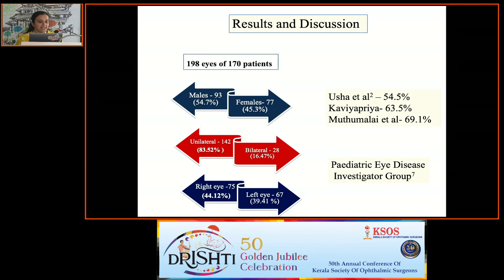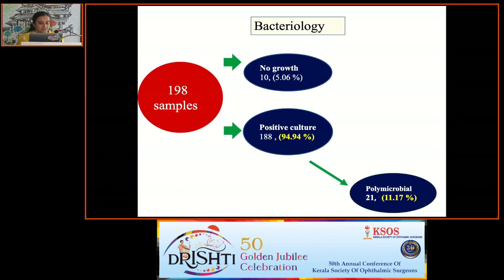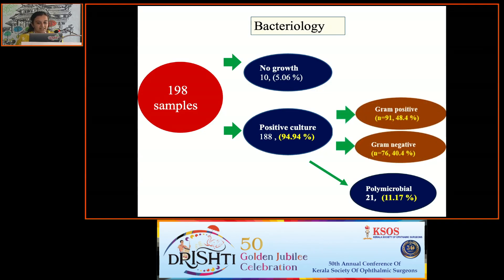Out of 198 eyes, we had a slight male predominance similar to previous studies, and 84% had unilateral involvement with almost equal distribution between the right and left eye. Out of 198 samples, 5% had no growth of organisms and 11% had a polymicrobial growth. We had a slight gram-positive predominance at about 48% and the remaining gram-negative at 40%.